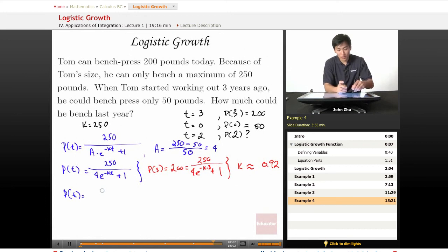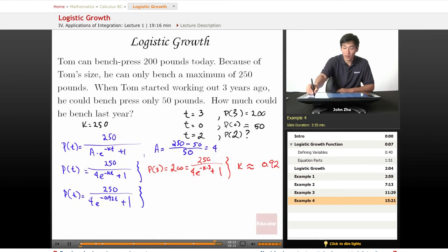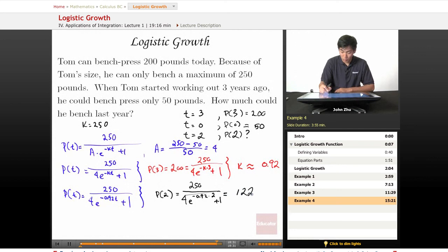So P of two equals 250 divided by 4 times E to the negative KT plus 1. Now that we have a completed model, we can go ahead and solve for T at 2. So P of two equals 250 divided by 4 times E to the negative 0.92 times 2 plus 1. And this equals, after we solve for it, 122 pounds.